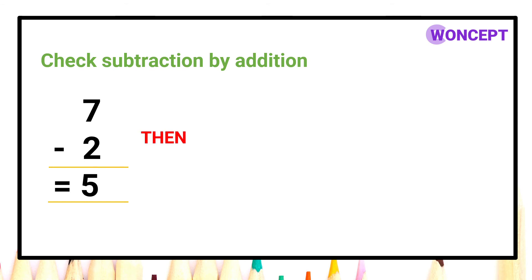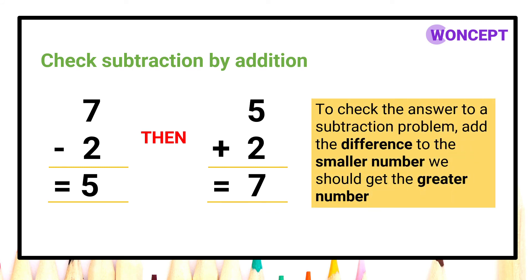See, when I add 5 with 2, I am getting 7. That means always remember to check the answer to a subtraction problem, add the difference to the smaller number so that you get the greater number. Here the difference was 5 which is added with the smaller number, that means 2, and we are getting 7 which is the greater number. So we get a method of checking subtraction by addition.